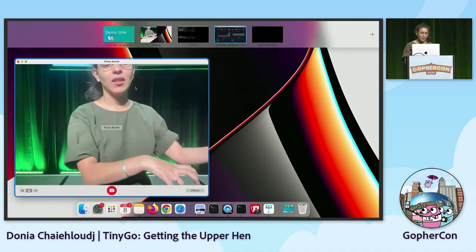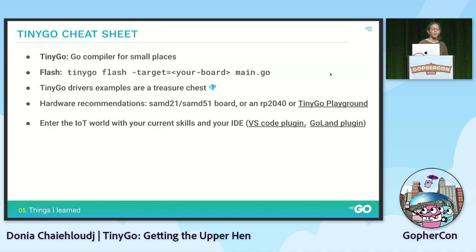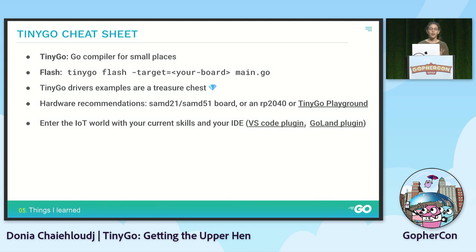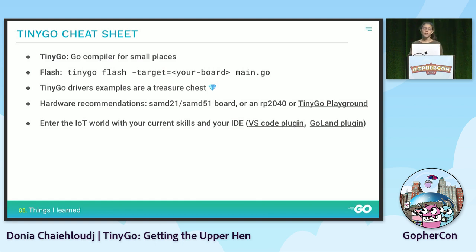I'm going to wrap up the presentation. You've learned the basics about TinyGo: it's a Go compiler for small places, and you know what small places means now. You can use the flash command to write to the board, or also the build or run commands. TinyGo focuses on keeping consistency with Go commands. The TinyGo drivers library has many examples for DHT, WiFiNina, and others. You can use them very easily - I used them when I began before modifying any code.